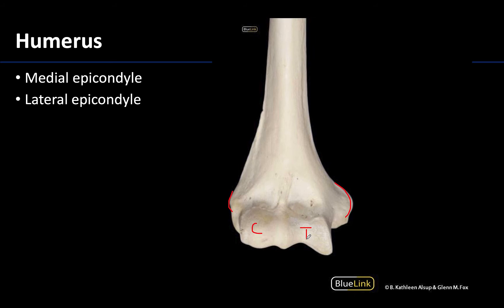The epicondyles are sites for attachment, so you'll have both ligaments and tendons attaching there. The medial epicondyle is the most prominent — it projects the most, projecting medially, so it's often hard to miss — and it will be on the same side as the trochlea.